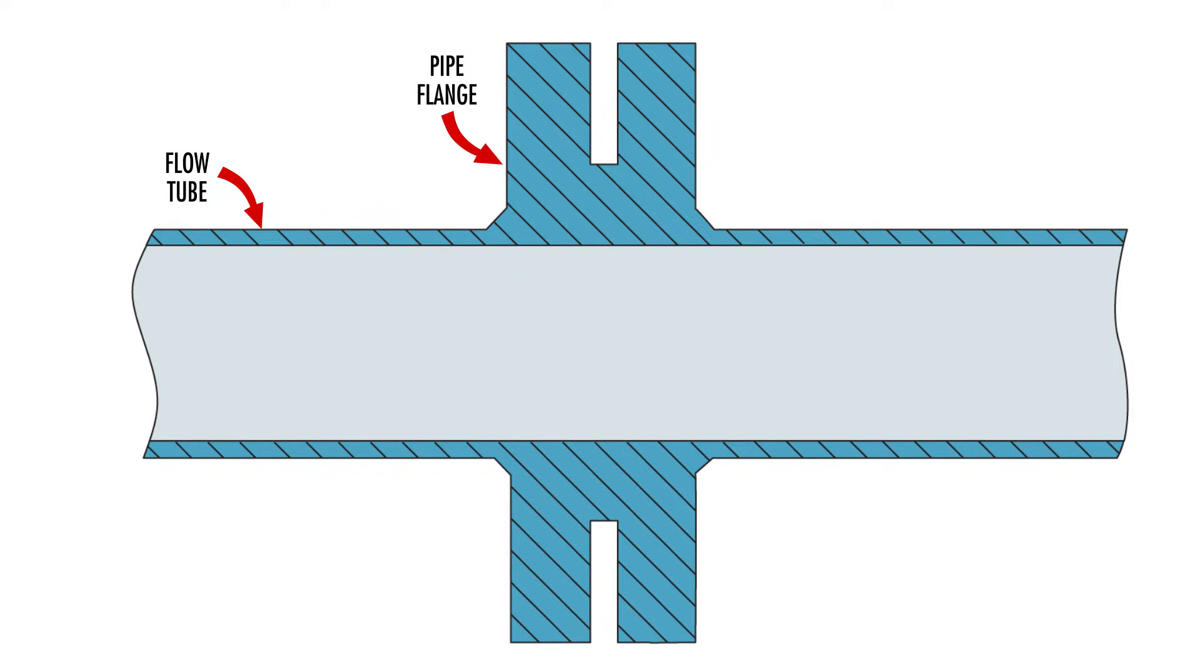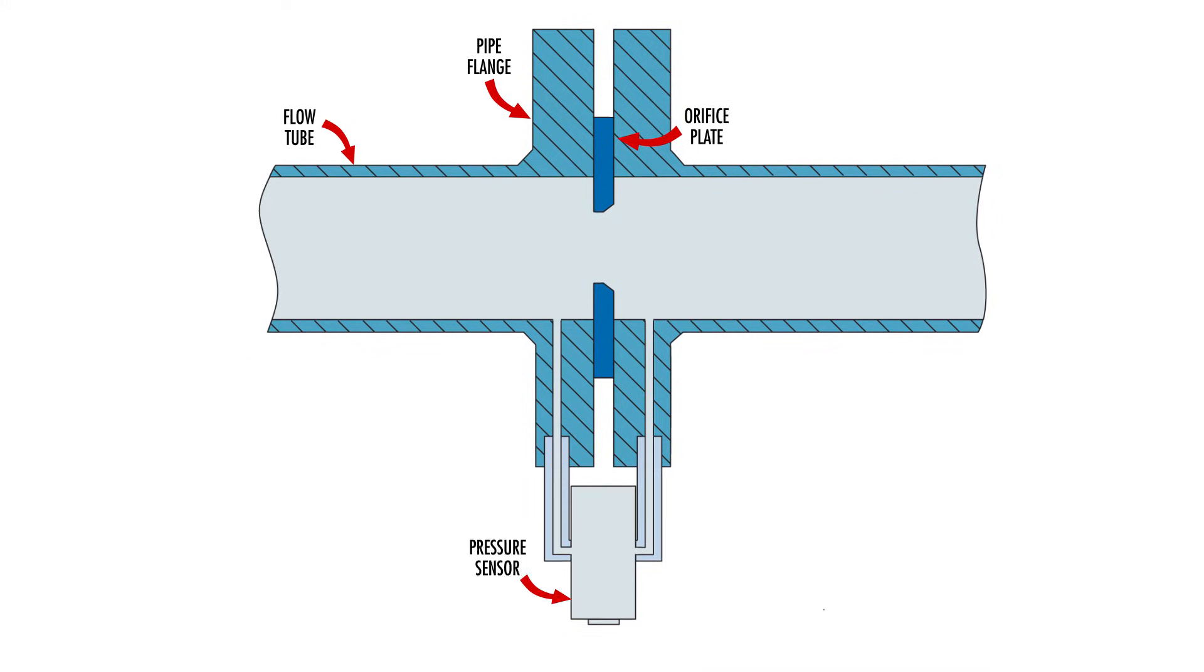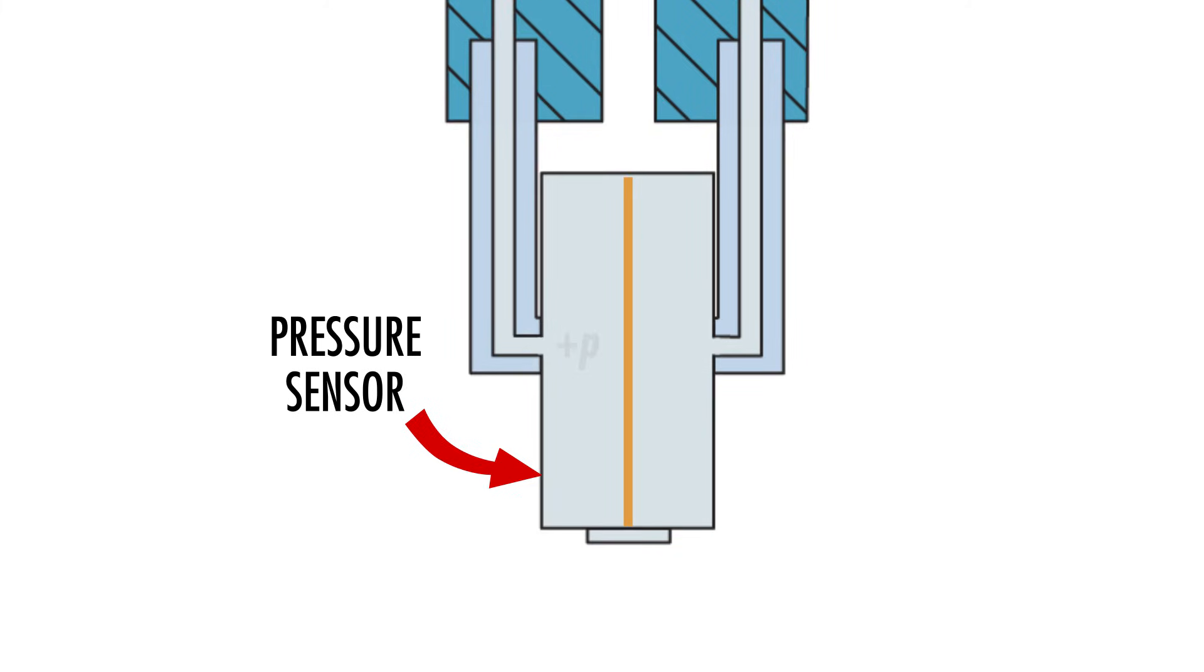Differential flow meters feature an artificial restriction such as this orifice plate. Two holes are located in the pipe walls, one before the restriction and one after. Tubes connect the two holes to a differential pressure sensor whose two pressure chambers are separated by a diaphragm. The sensor detects minute changes in pressure between the two chambers.